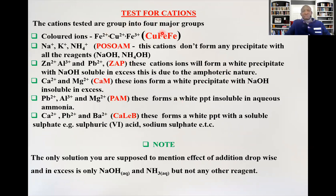We talked about the colored ions — iron(II), copper(II), and iron(III). For the POZOOM group — sodium, potassium, ammonium — they don't form any precipitate with any reagent. For the ZAP group, these cations form a white precipitate with sodium hydroxide which is soluble in excess, due to the amphoteric nature of the hydroxides of zinc, aluminium, and lead. Calcium and magnesium form a white precipitate with sodium hydroxide which is insoluble in excess.